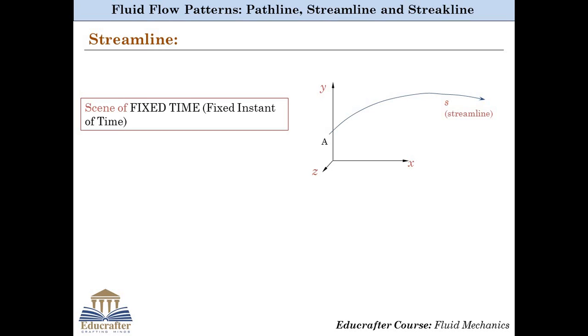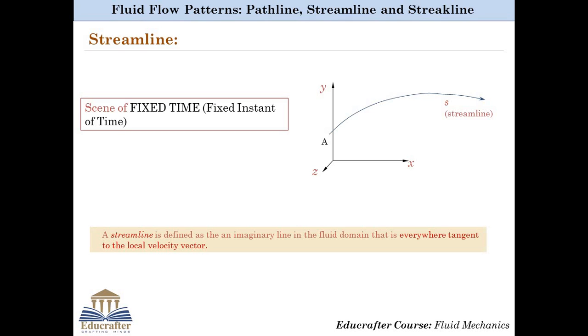Hence, a Streamline is specified at a particular instant of time and is defined as an imaginary line in the fluid domain that is everywhere tangent to the local velocity vectors.